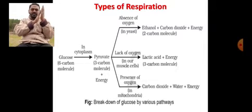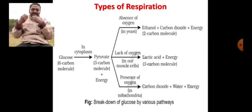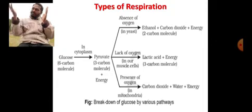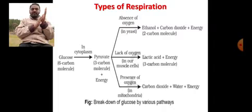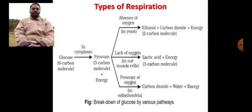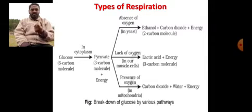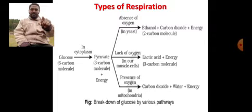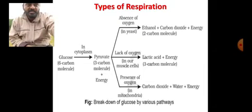That foggy structure is nothing but water vapor. Carbon dioxide will not freeze like that, but water vapor — which comes from our body — when it contacts the atmospheric temperature, it cools down and that foggy structure appears. So water vapor is also released out when we respire, along with carbon dioxide. The energy released is stored in the form of ATP in our mitochondria — that is what respiration is meant for.